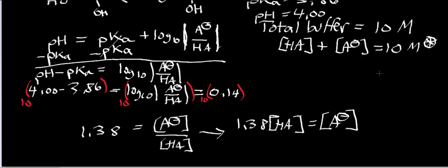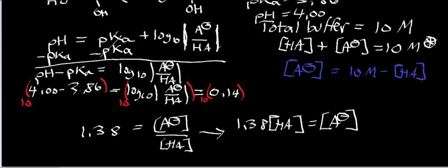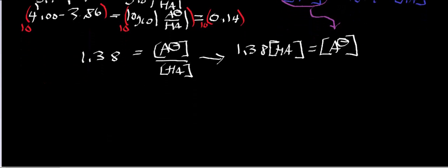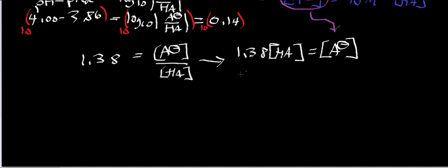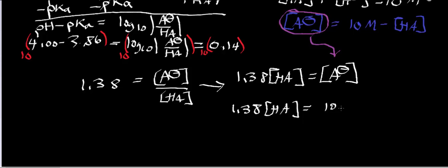Now we can make a substitution using the mass balance equation. The concentration of A- equals 10 molar minus the concentration of HA. Substituting this expression for A- into our equation gives us: 1.38 times [HA] equals 10 molar minus [HA].